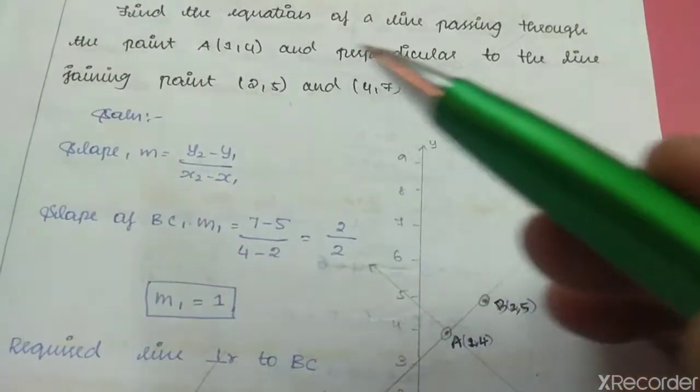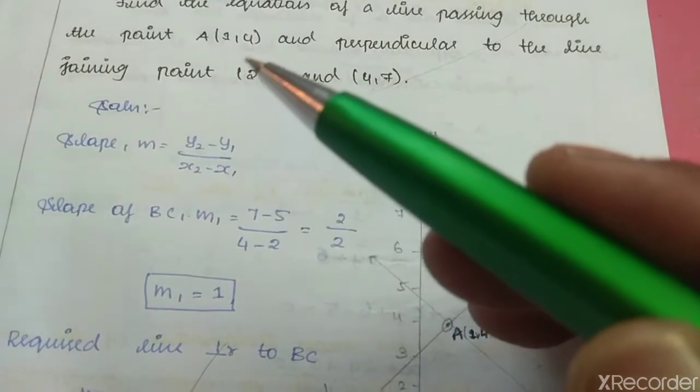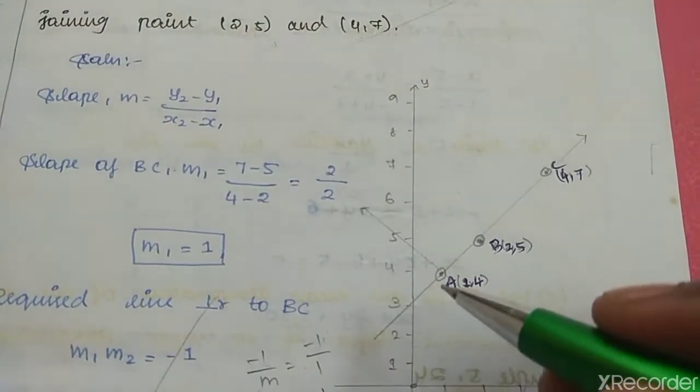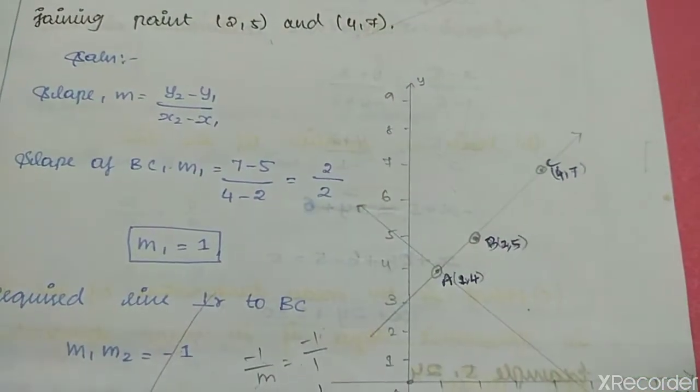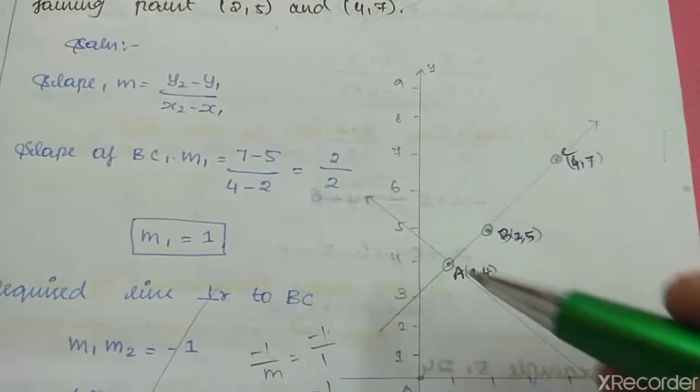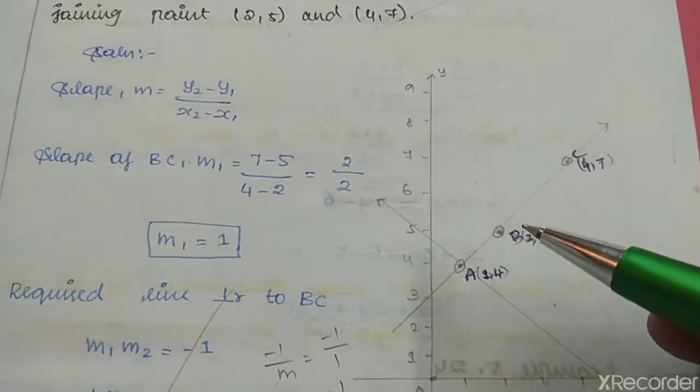The line passes through point (1,4) and is perpendicular to the line passing through B and C. To find the line equation, we first need to find the slope of BC.